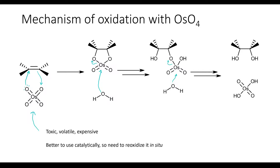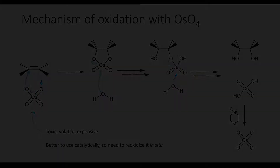To do that, people often use N-methylmorpholine N-oxide, also known as NMO, to re-oxidize osmium tetroxide in situ, regenerate the osmium compound, and use up the NMO sacrificially.